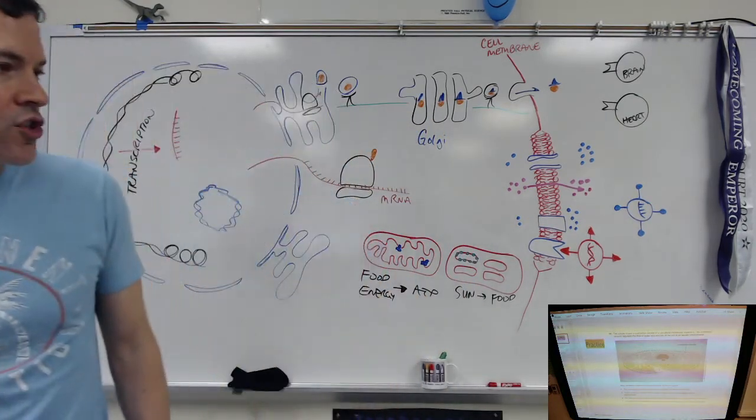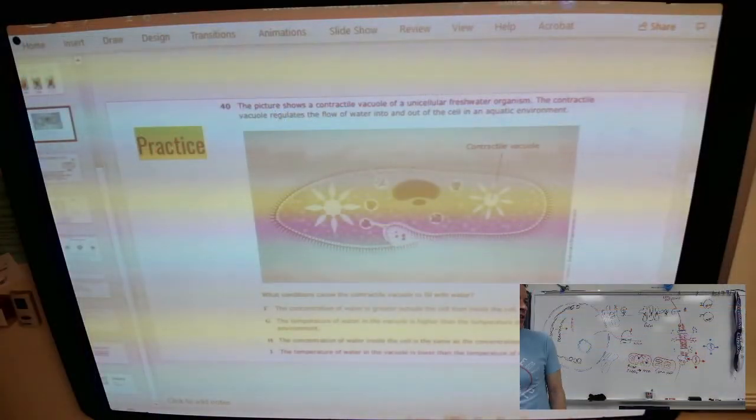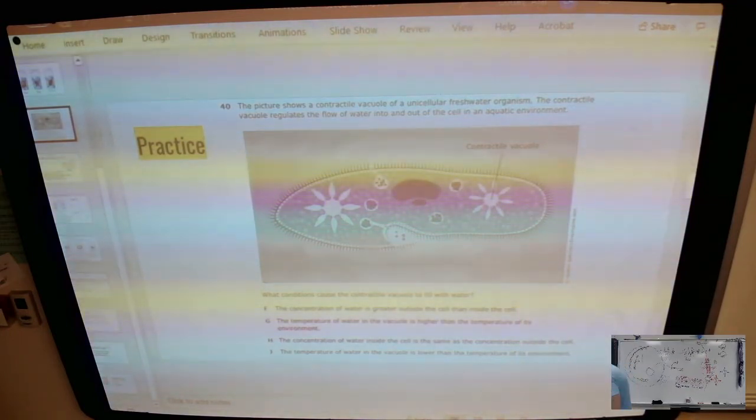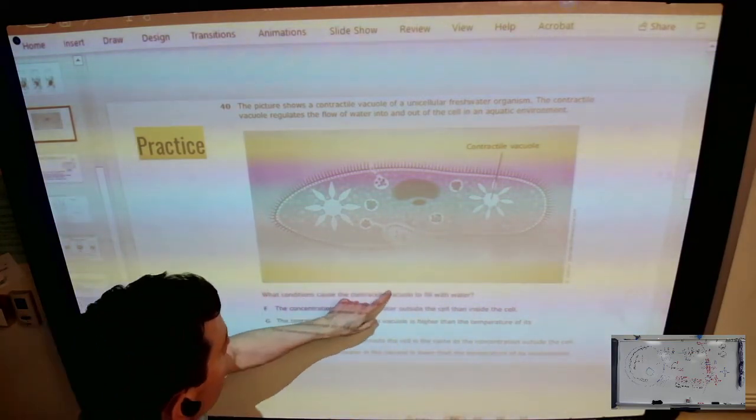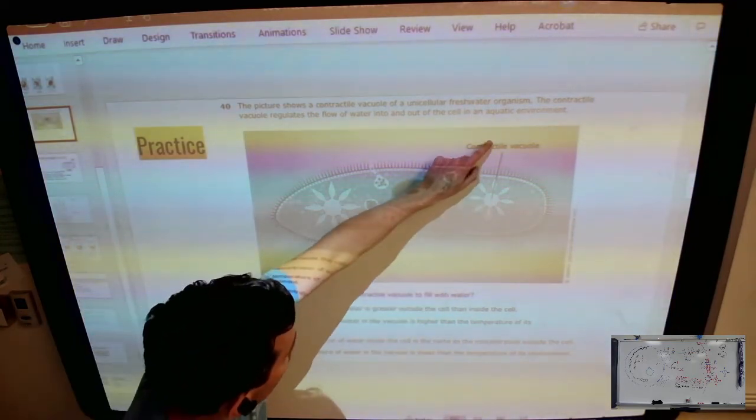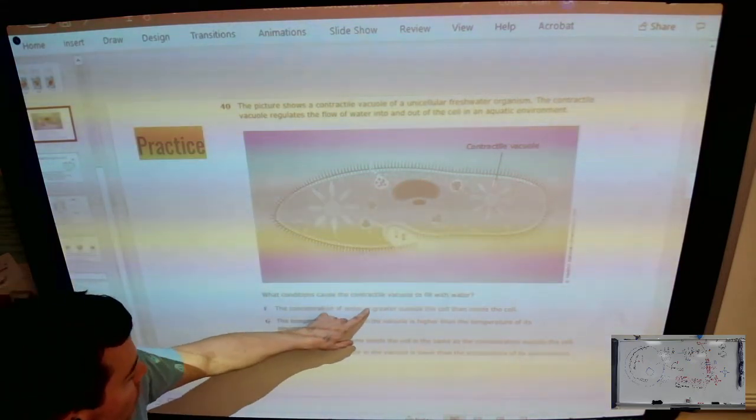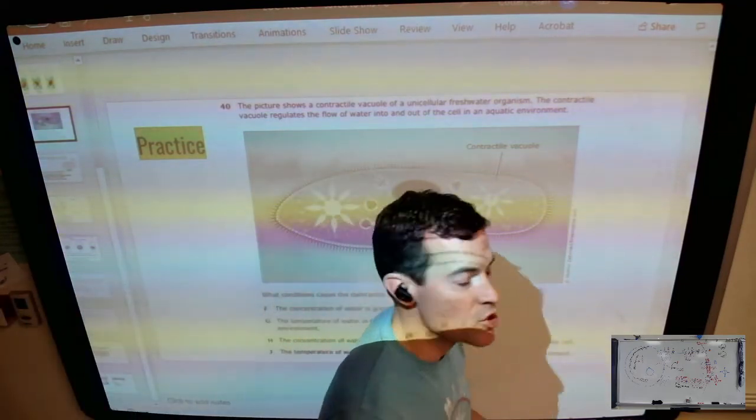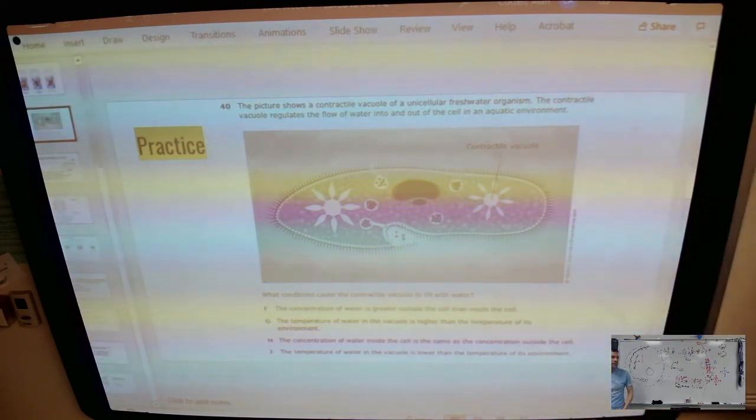So now let's go back to our question and see what it was asking us here. So what conditions cause the contractile vacuole to fill with water? Well, if they're filling up with water and they're on the inside, that means water is moving from high to low concentration. So the concentration of water is greater outside the cell than inside the cell. Contractile vacuoles have nothing to do with temperature. So those were just distractors, the two related to temperature.